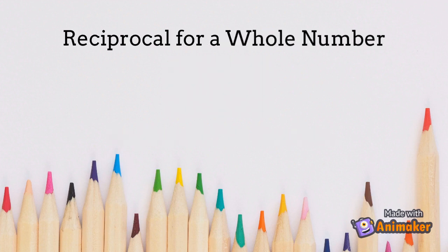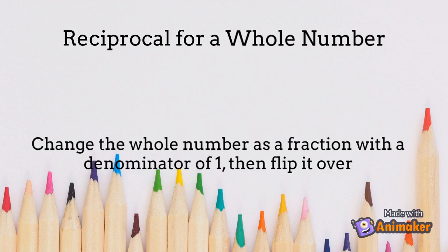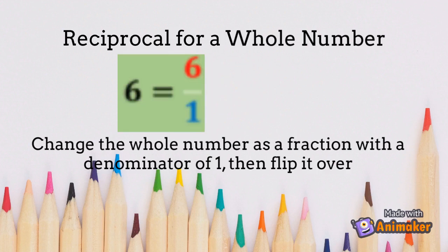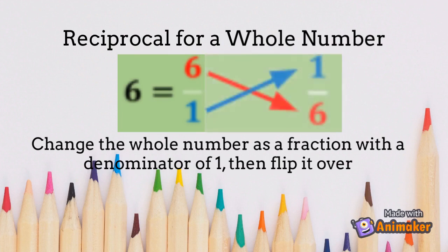To find the reciprocal of a whole number, first change it as a fraction with a denominator of 1, then flip it over. Example: 6 is equal to 6 over 1, and its reciprocal is 1 sixth.